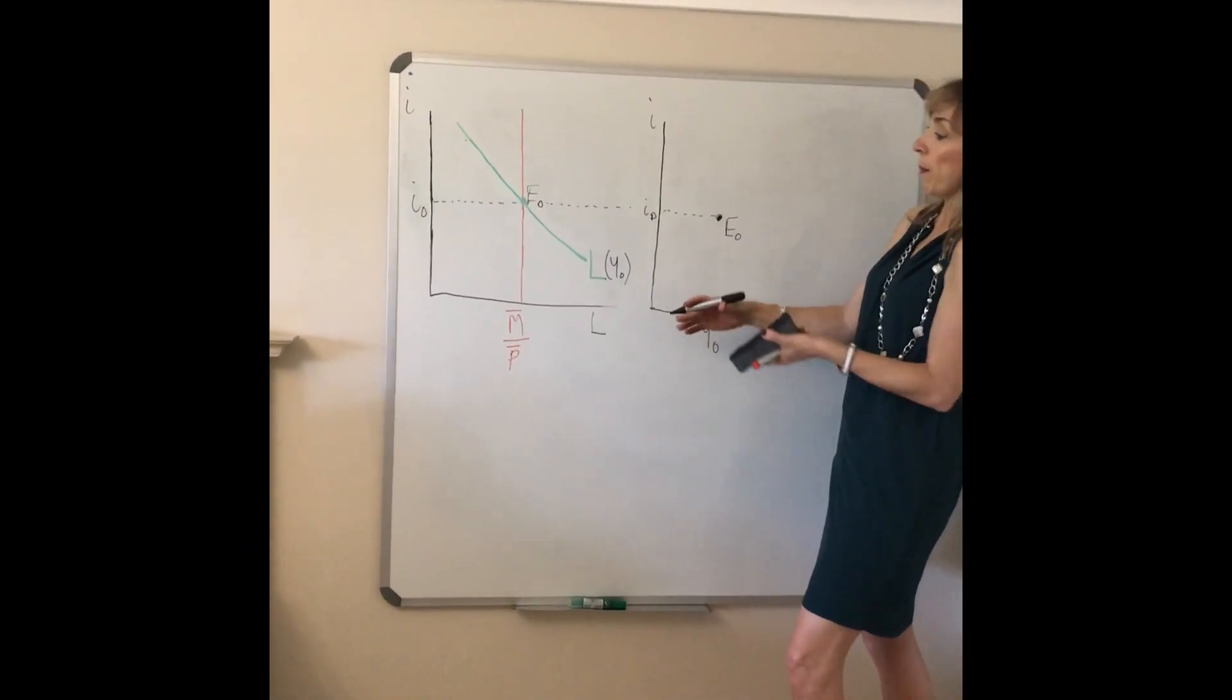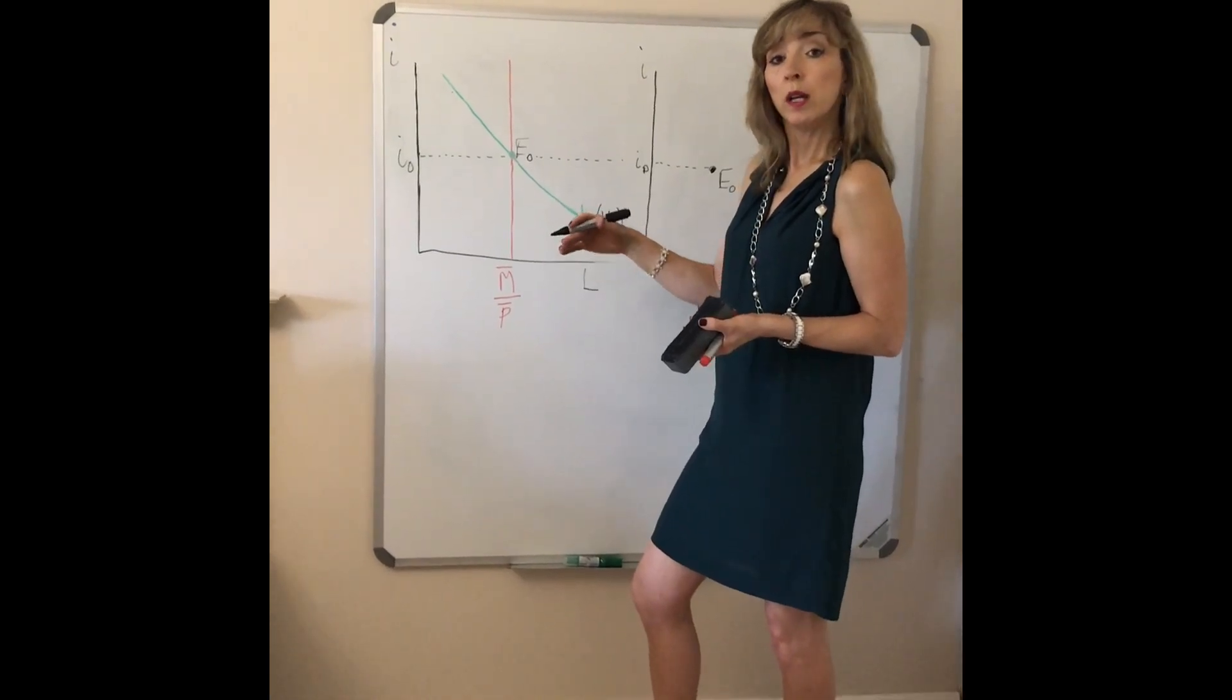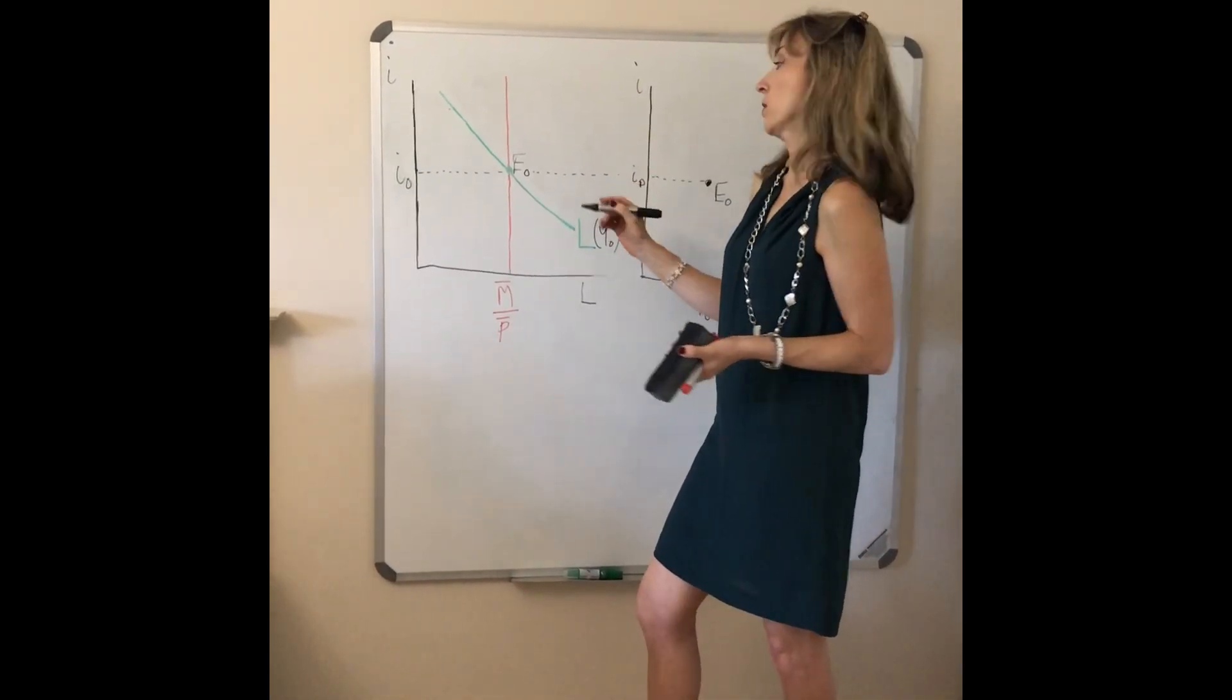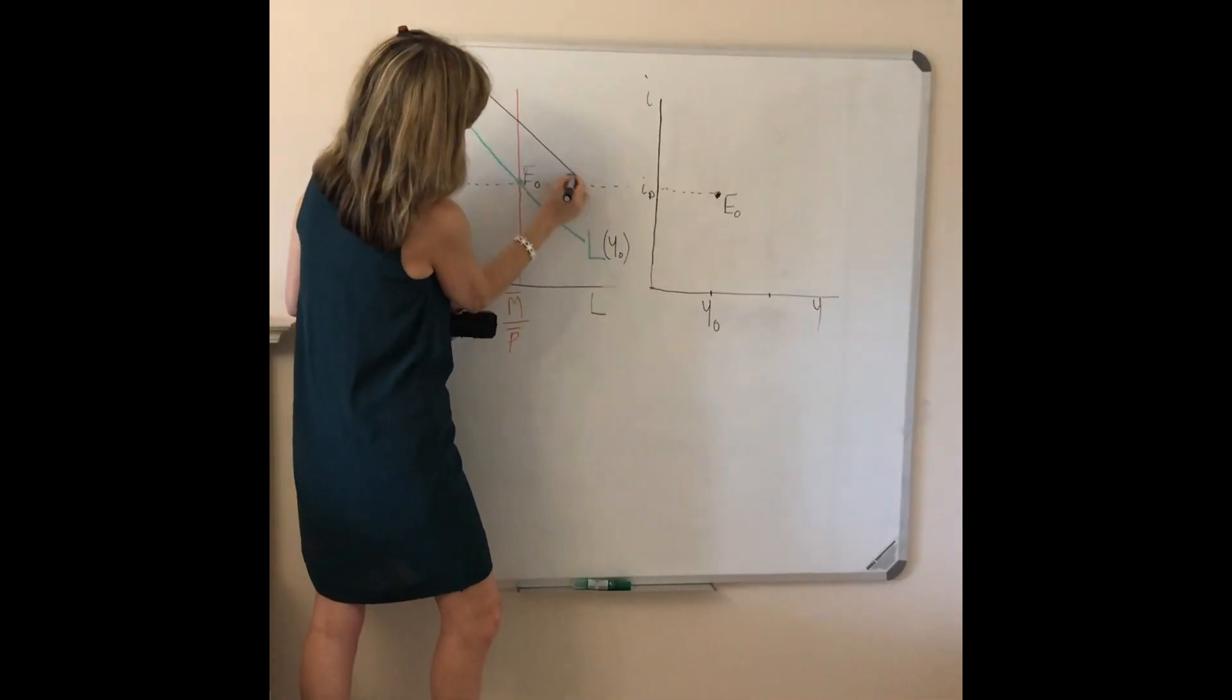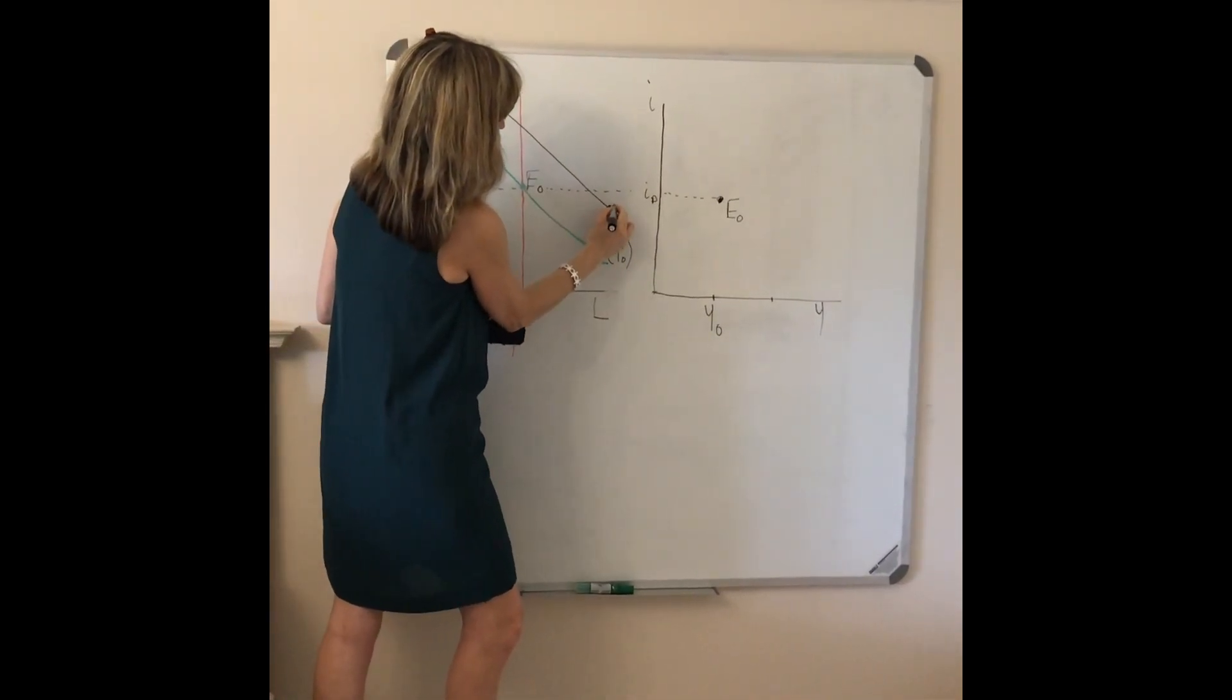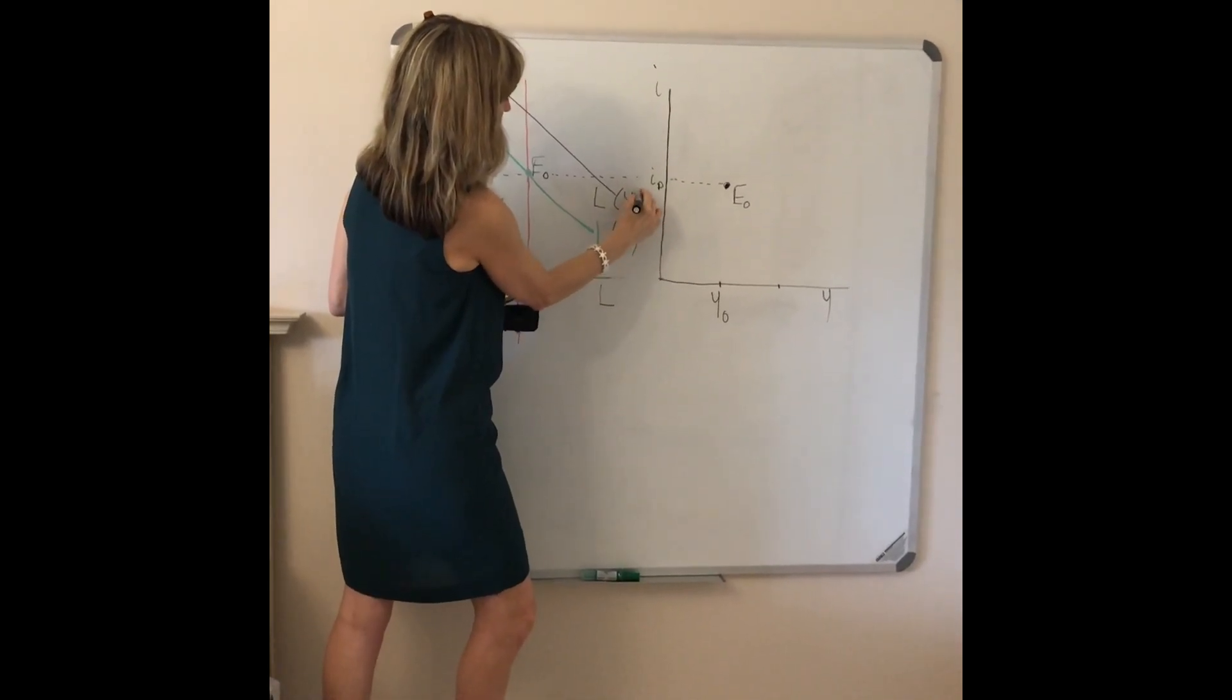Now we want to look at what happens if income were to increase and we know that will cause the money demand curve to shift to the right because income has risen. So we can plot that and show it shifting to the right and we get a new liquidity demand curve at an income level Y1.